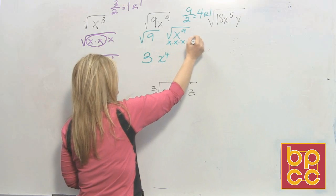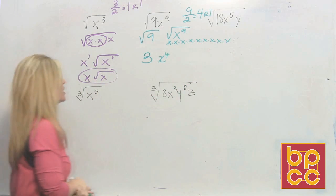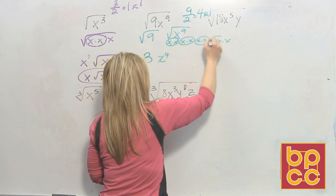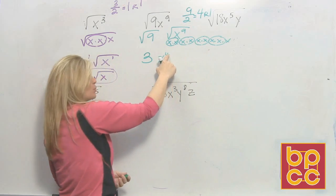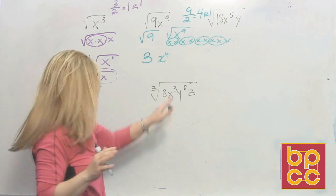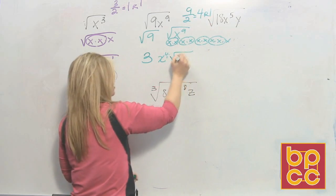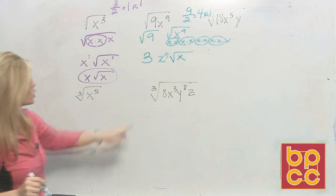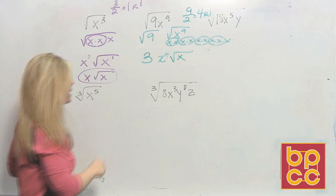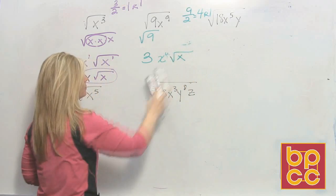Visually, think of x to the 9th as 9 x's. Square root means making groups of 2, and that makes 4 groups of 2. If I have 9 of something and I make groups of 2, I'd have 4 groups of 2 with one left over. The remainder stays on the inside. So the answer is 3x to the 4th times the square root of x. There's no need to draw it all out — you just have to learn how to divide in your head.